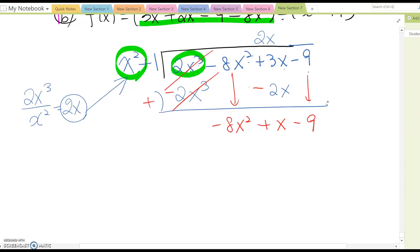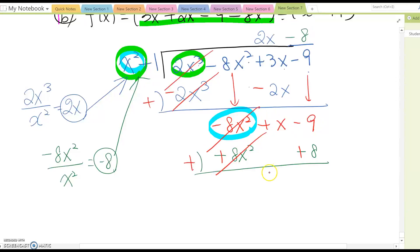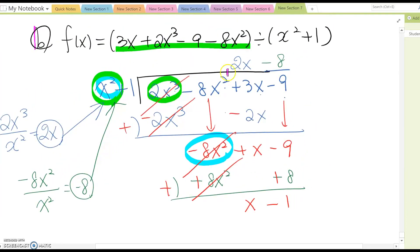Then what do we compute again? Yes, only leading term of dividend and divisor. So we just make negative 8x square over x square, then you get negative 8. Now you multiply this with this divisor. Don't forget put quotient area as well, become negative 8x square and then minus 8. You subtract, which means switch their sign, so become plus and plus here. So those two cancel out, and then become x minus 1. So in this problem case, this is our quotient and this is our remainder.